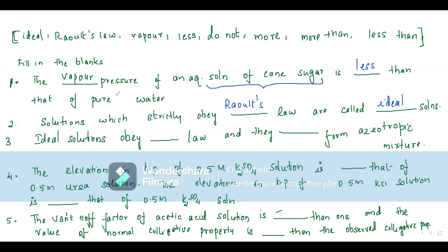These are all board questions, that's why you see the repetition. Ideal solutions obey Raoult's law and they dash form azeotropic mixture. Do they form azeotropic mixture or do they not form? Ideal solutions do not form azeotropic mixture. Non-ideal solutions form azeotropic mixture.